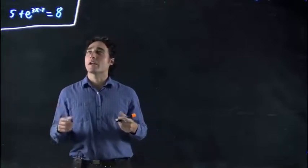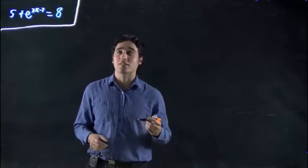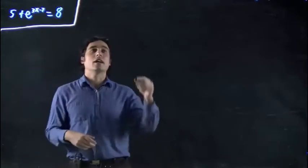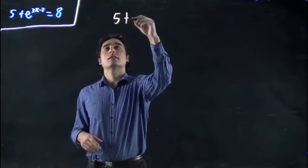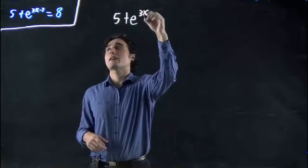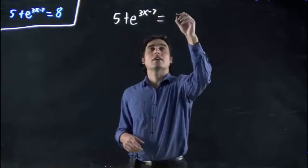Welcome back. We're still looking at exponentials and solving them. So what do we have? 5 plus e to the 3x minus 7, and all of that is equal to 8.